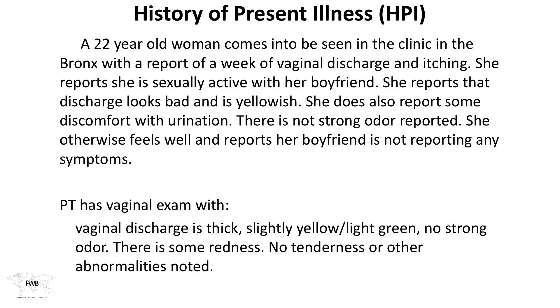Dr. Daniel Griffin is now going to give a clinical vignette illustrating the pathogenesis of this infection. This is a 22-year-old woman presenting to a clinic in the Bronx with a week of vaginal discharge and itching. She is sexually active with her boyfriend, reports a yellowish discharge, and is quite upset. She also reports some discomfort when she urinates, no strong odor, and her boyfriend reports no symptoms. On vaginal exam, the discharge is thick, slightly yellow to light green, with some redness noted and no tenderness.